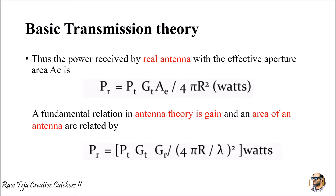The power received by a real antenna with effective aperture area Ae is given by: Pr = Pt · Gt · Ae / (4πr²) watts, where Pr is the received power, Pt is the transmitted power, Gt is the transmitting antenna gain, and Ae is the effective aperture area.